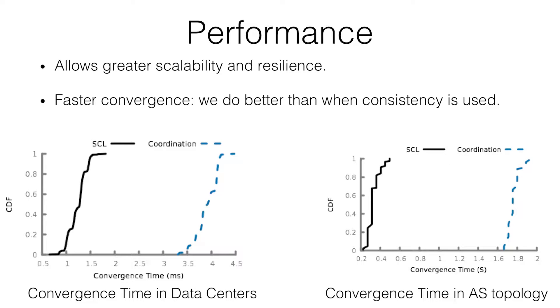This gap grows wider when you're on a wide area network where latencies are much higher. This is not magic — it's a fundamental thing. Consensus has at minimum an RTT or two of cost. If you just account for that, you'll get these graphs.